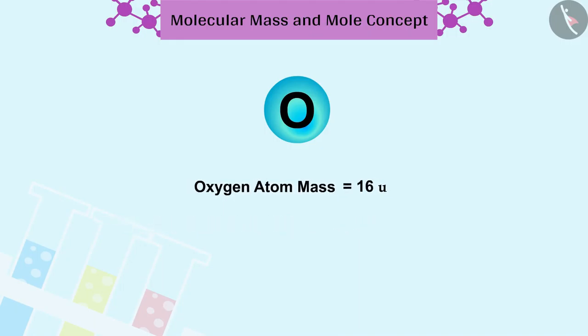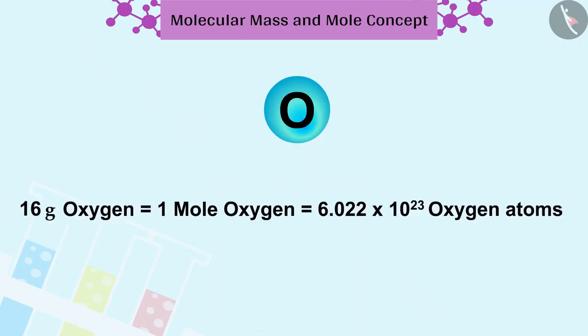16U oxygen has only one oxygen atom. And in 16 grams of oxygen, it's one mole atom. That is, 6.022 into 10 raised to 23 oxygen atoms.